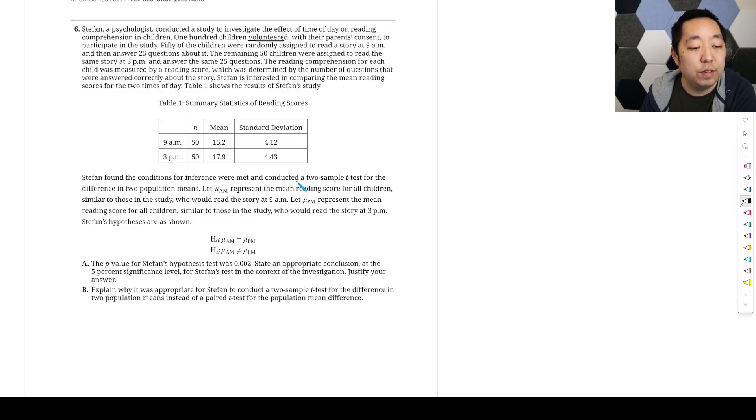Stefan found the conditions for inference were met and conducted a two-sample t-test for the difference in the two populations. Let mu a.m. represent the mean reading score for all children similar to those in the study who would read the story at 9 a.m. Let mu p.m. represent the mean reading score of all children similar to those in the study who would read the story at 3 p.m.